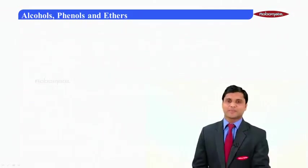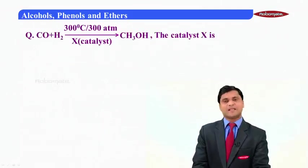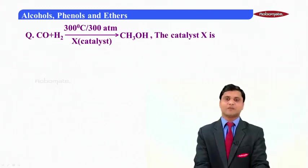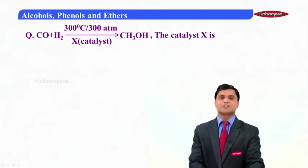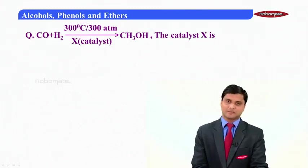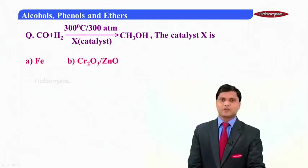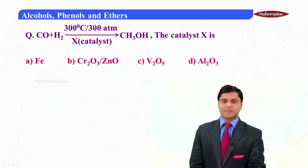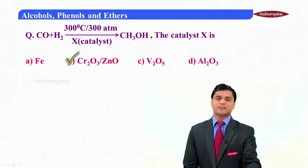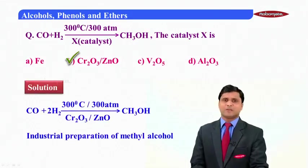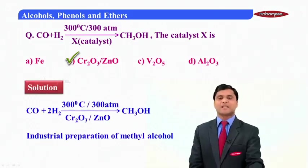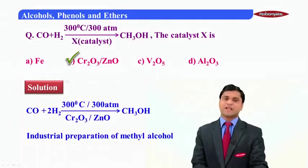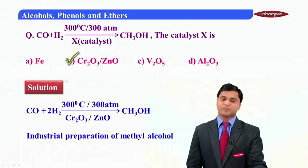Look at the reaction: CO + H₂ at 300°C and 300 atmospheres in the presence of catalyst X gives CH₃OH (methyl alcohol). Identify catalyst X. Options: A) iron, B) chromium oxide and zinc oxide, C) vanadium pentoxide, D) aluminum oxide. The correct answer is B, chromium oxide and zinc oxide. Industrial preparation of methanol is done by passing CO and H₂ over chromium oxide and zinc oxide at 300°C and 300 atmospheric pressure.